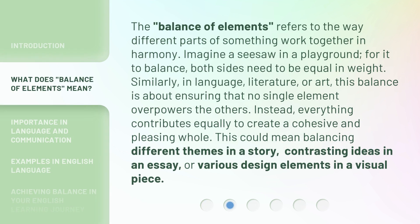The Balance of Elements refers to the way different parts of something work together in harmony. Imagine a seesaw in a playground — for it to balance, both sides need to be equal in weight. Similarly, in language, literature, or art, this balance is about ensuring that no single element overpowers the others. Instead, everything contributes equally to create a cohesive and pleasing whole.